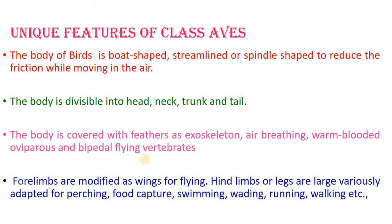The forelimbs are modified as wings for flying. In birds, the forelimbs are not used for catching food or ground locomotion. In other tetrapods, the forelimbs are used for walking, and in humans they are used for various purposes like writing, holding objects, or eating — but in birds the forelimbs are wings and serve only for flight.